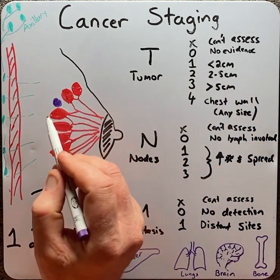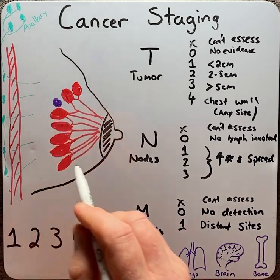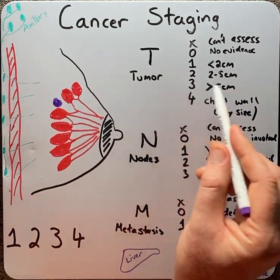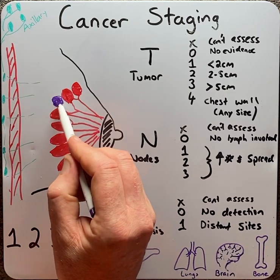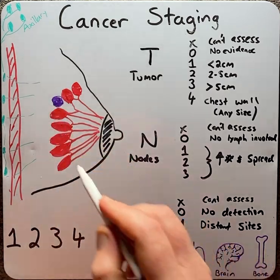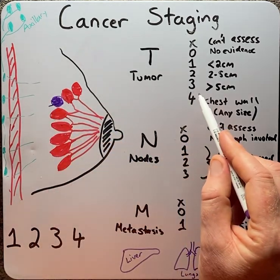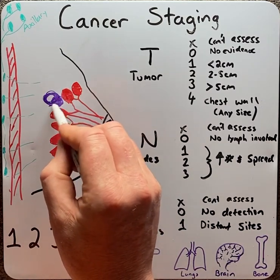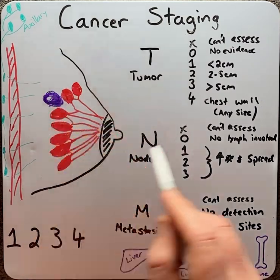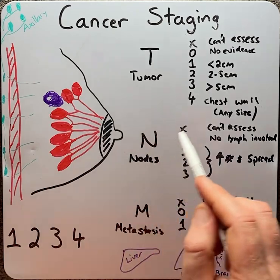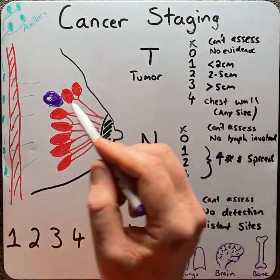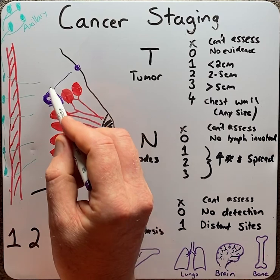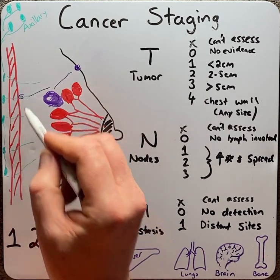A T1 means that the tumour is approximately 2 centimetres or less. A T2 means that the tumour is 2 to 5 centimetres in size. A T3 means that the tumour is 5 centimetres or greater. A T4 means the tumour size can be of any size, but has moved into either the skin or the chest wall.